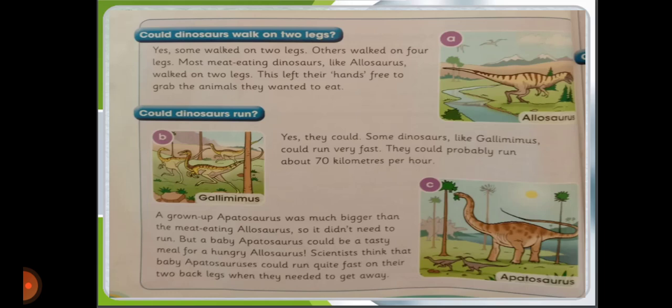Now we will look at the textbook page. Could dinosaurs walk on two legs? Yes, some walked on two legs, while others walked on four legs. Most meat-eating dinosaurs, like Allosaurus, walked on two legs. This left their hands free to grab the animals they wanted to eat — to hunt and grab the animal.